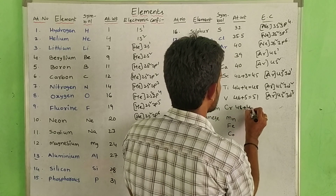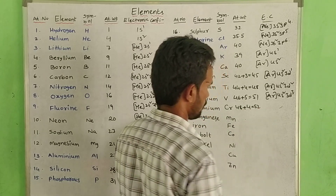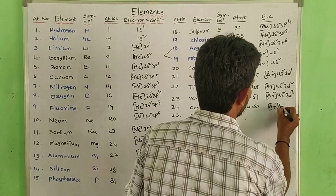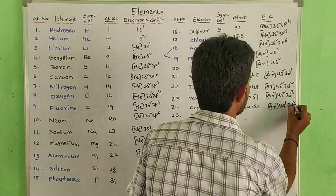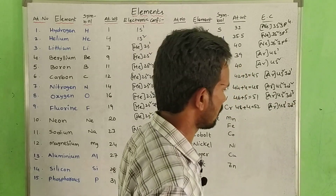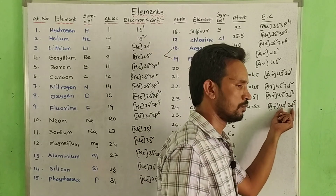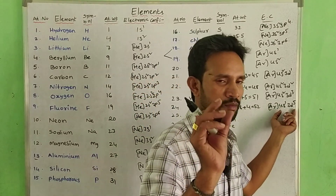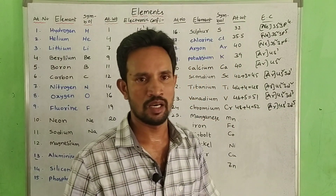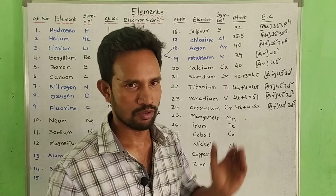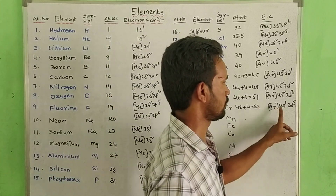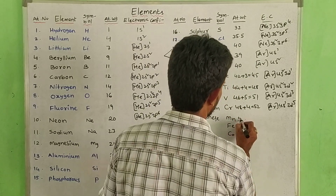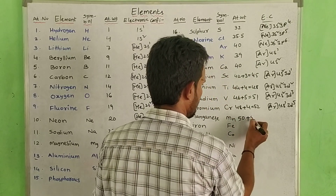Next: chromium, element 24, atomic weight approximately 52. Electronic configuration is [Ar] 4s1 3d5 — not 4s2 3d4. This is stability-based: the outermost sub-shell half-filled configuration gives extra stability, so chromium adopts [Ar] 4s1 3d5.